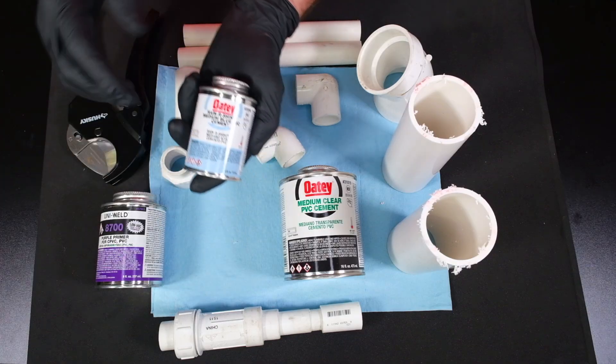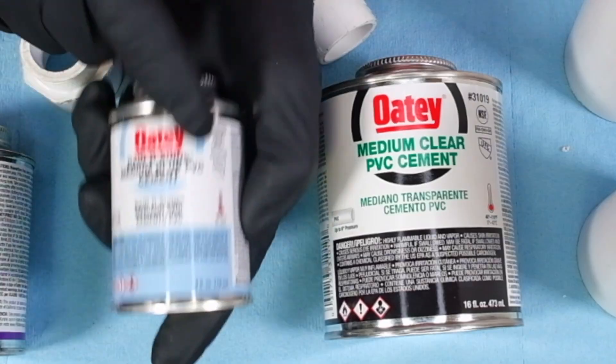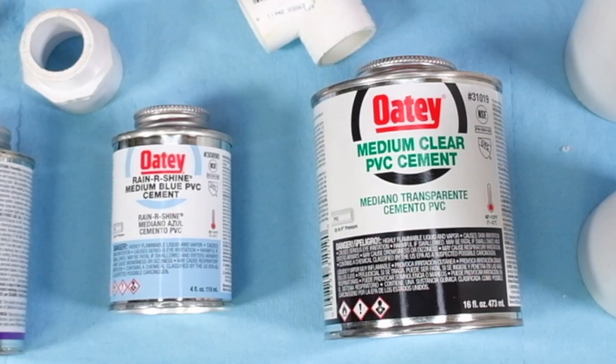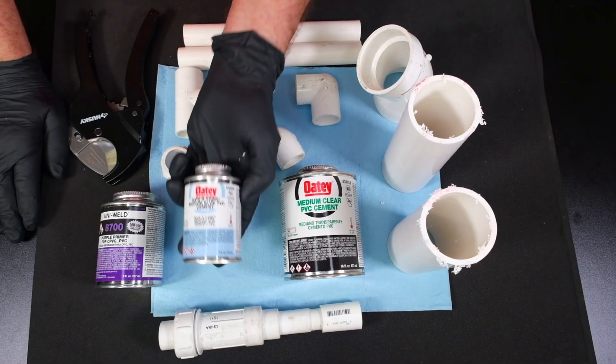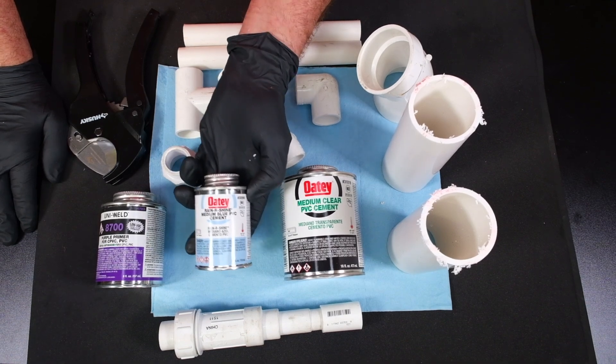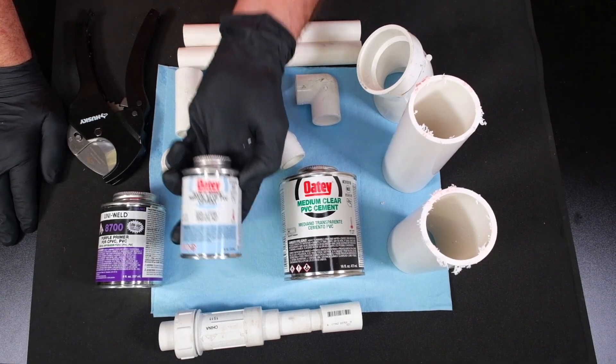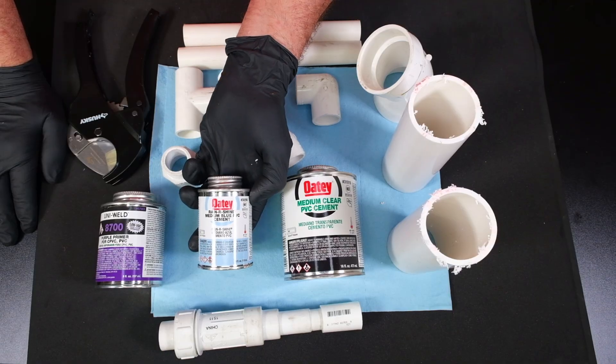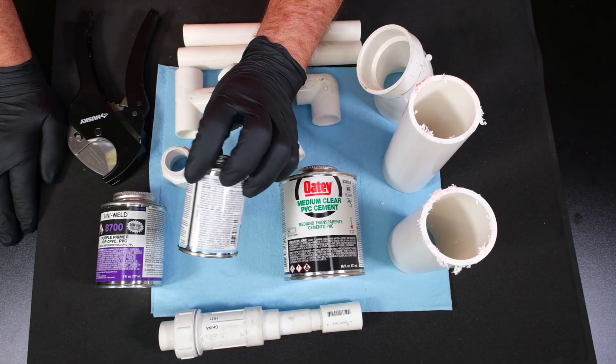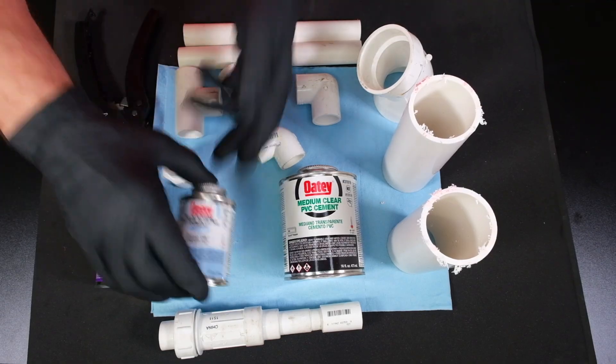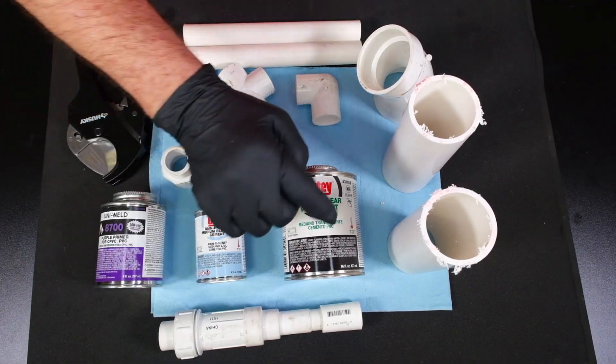As you notice here, we have medium, we have primer. But on this you see rain or shine glue. And this you just see medium clear PVC cement. Oddly enough, a lot of guys think that this is going to set up faster and quicker when you have maybe a water pipe to repair. But in reality, if you read the instructions on the back, this one sets up exactly the same time as this one.